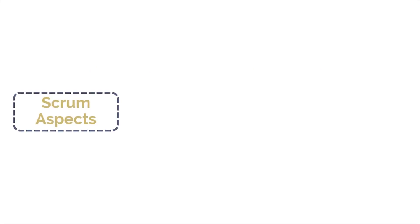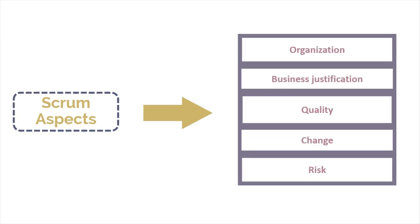The five Scrum aspects that we will discuss in this module are organization, business justification, quality, change, and risk. In the SBOT Guide, all five Scrum aspects are presented in chapters 3 through 7. We will be discussing all of them one by one, but let's first start with the very first aspect: organization.